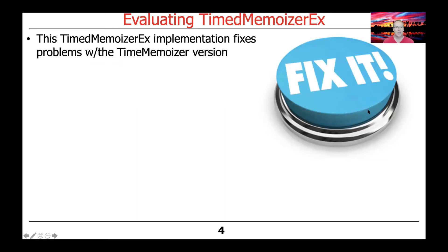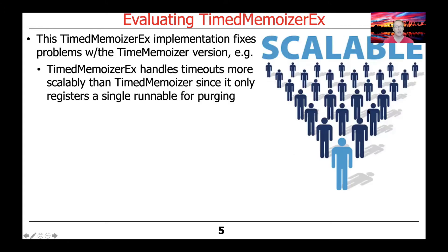Timed Memoizer EX fixes some of the problems with the Timed Memoizer version. In particular, it handles timeouts more scalably since it only registers a single runnable for purging — not one runnable for every key-value pair. So you could have hundreds or thousands of key-value pairs, but you only have one timed runnable.